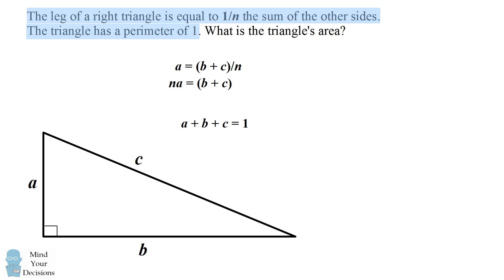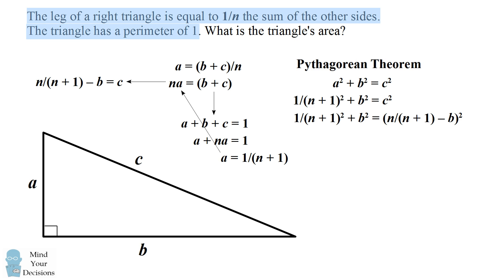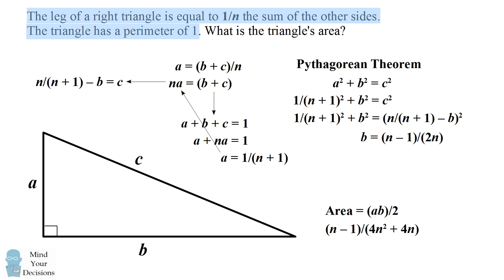The triangle has a perimeter of 1, so A plus B plus C equals 1. Substituting B plus C equals nA, we solve that A equals 1 divided by (n plus 1). Then substituting A back, we get C equals n divided by (n plus 1) minus B. Using the Pythagorean theorem with the known value of A and C expressed in terms of B, we solve that B equals (n minus 1) divided by 2n. The area — the product of the legs divided by 2 — is (n minus 1) divided by (4n squared plus 4n).